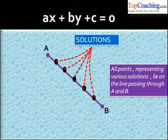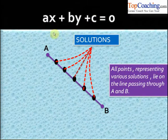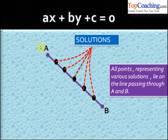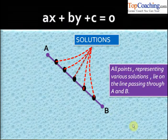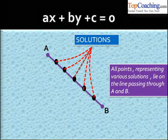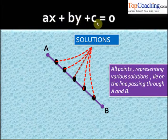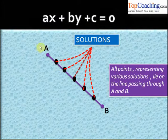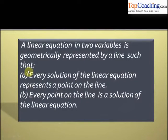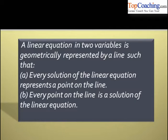All the solutions of the equation ax plus by plus c equal to zero are represented on this line. Every point on this line is actually a solution of the equation. So a linear equation in two variables is geometrically represented by a line such that every solution of the linear equation is a point on the line, and every point on the line is a solution of the linear equation. This is the geometrical meaning of a linear equation in two variables.